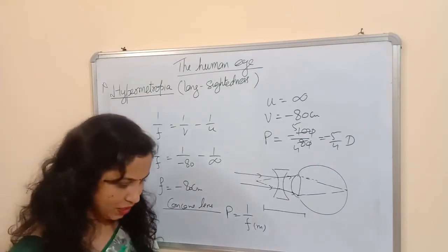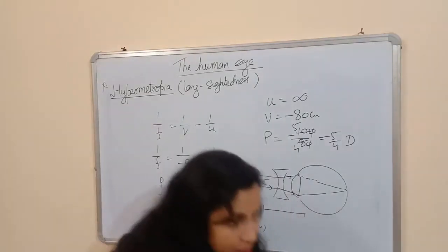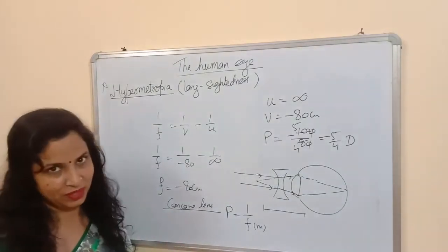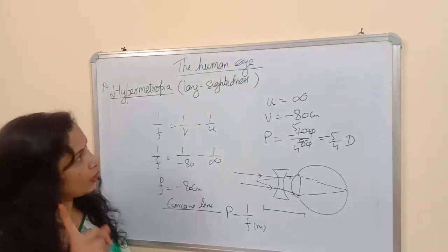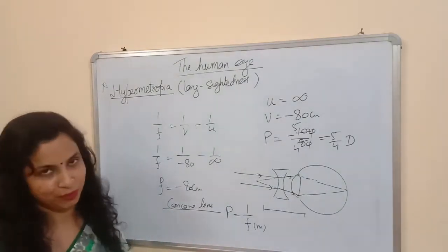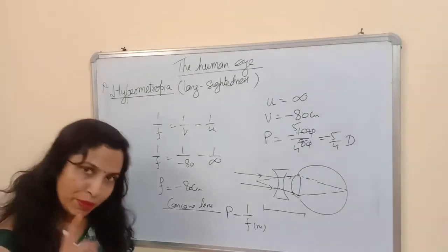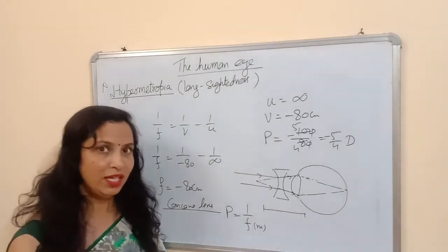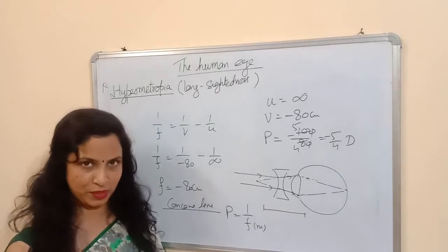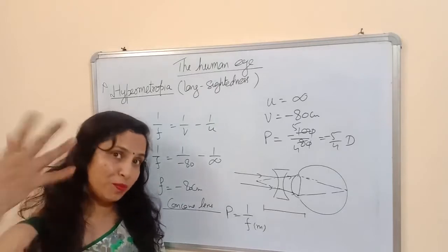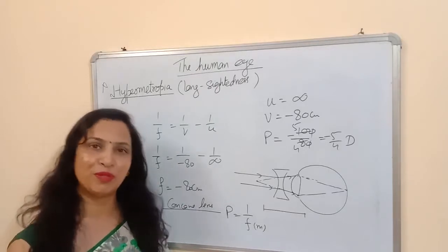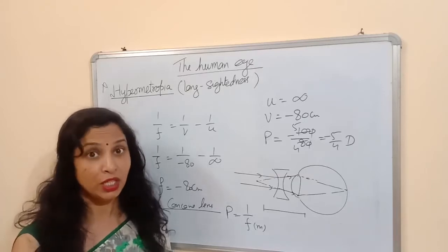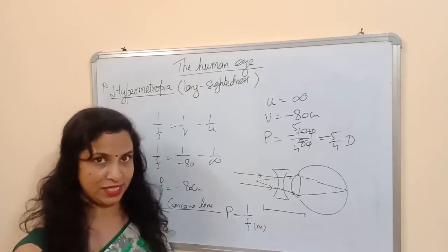So this is the numerical based on myopia. Now I am going to explain what hypermetropia is. Hypermetropia is just the opposite of myopia. In myopia a person cannot see far objects, but in hypermetropia a person cannot see nearby objects clearly, though they can see far objects very clearly.